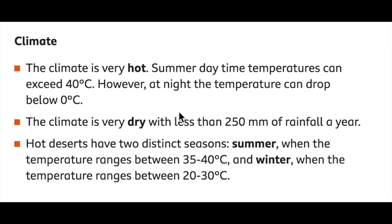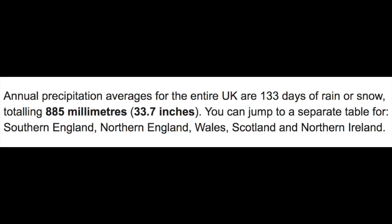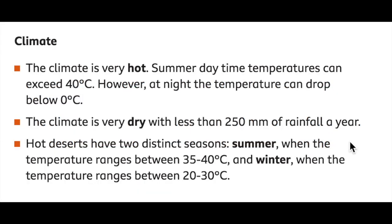The first and most obvious characteristic of a hot desert is its climate — and obviously it will be very hot. In the daytime, temperatures can exceed 40 degrees Celsius. Another characteristic is that at night, the desert can become very cold — it could even be below freezing at some points. There is also very little precipitation and high amounts of evaporation, meaning it is very dry with less than 250 millimetres of rainfall a year. In the UK, we receive about 885 millimetres of precipitation a year.